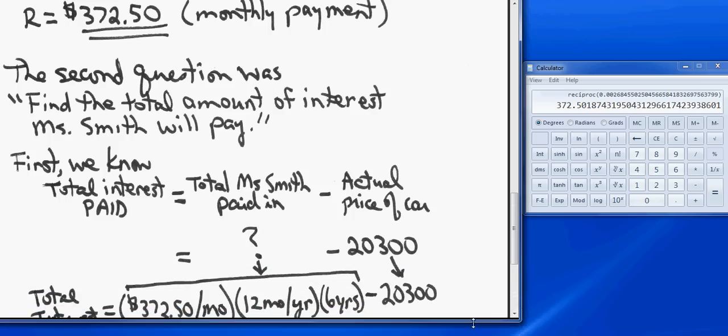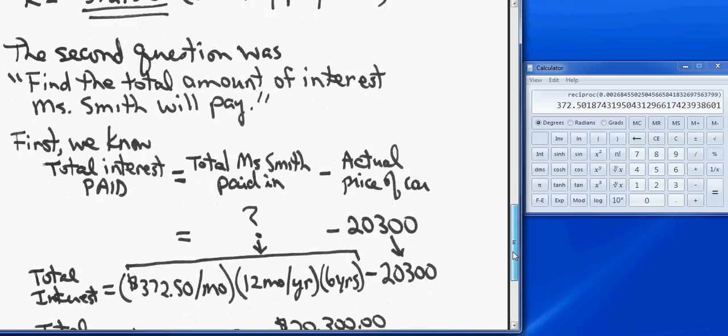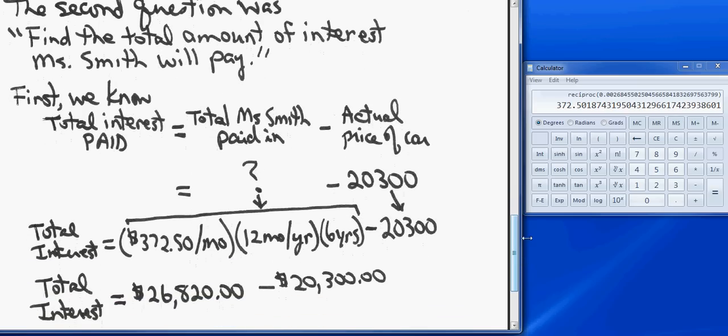The really challenging part, if there is one, is to figure out the total price that she paid in over the course of that loan, and that's really not hard either. Her total interest is going to be her monthly payments—she paid $372.50 a month for 12 months out of the year for 6 years—so it's 372.50 times 12 times 6, and then of course we're going to take the price of the car off at the end.